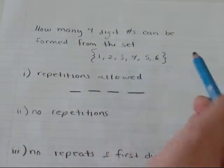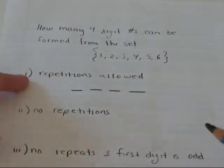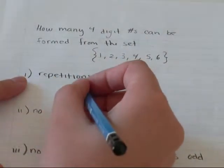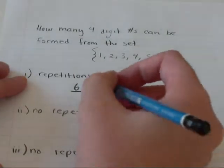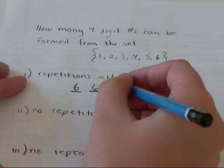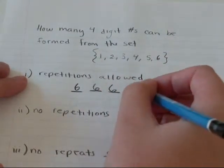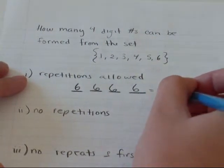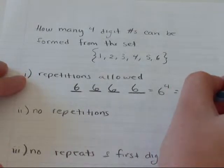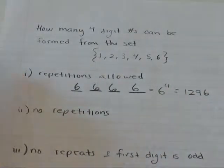There's 1, 2, 3, 4, 5, 6 numbers to choose from. Repetitions are okay, so I have six choices for my first number, six choices for my second number, six choices for my third number, six choices for my fourth number. So 6 to the 4 equals 1,296.